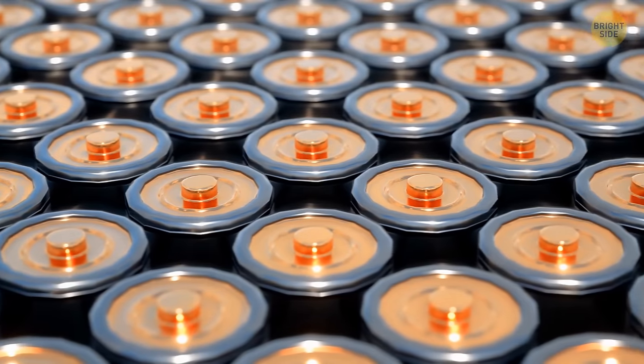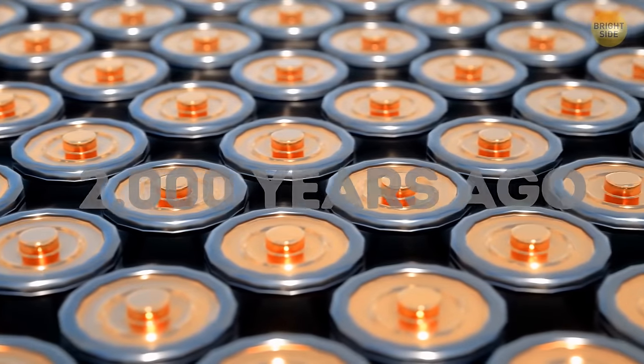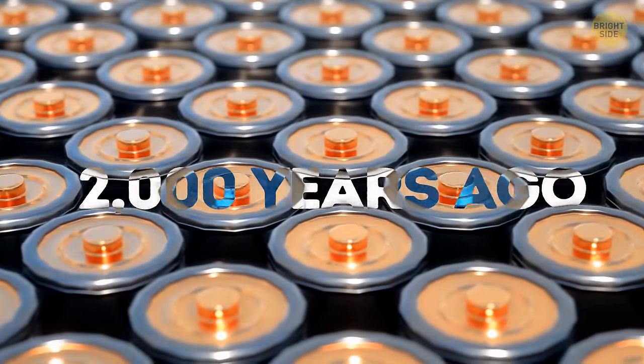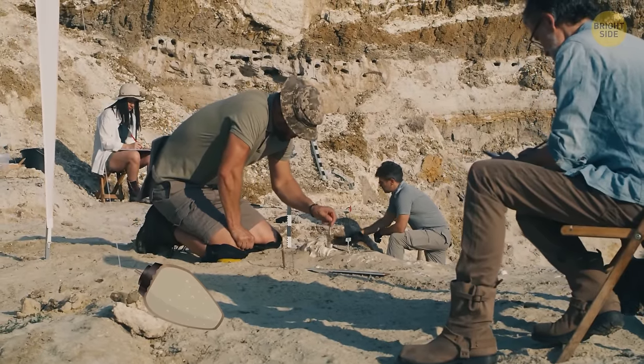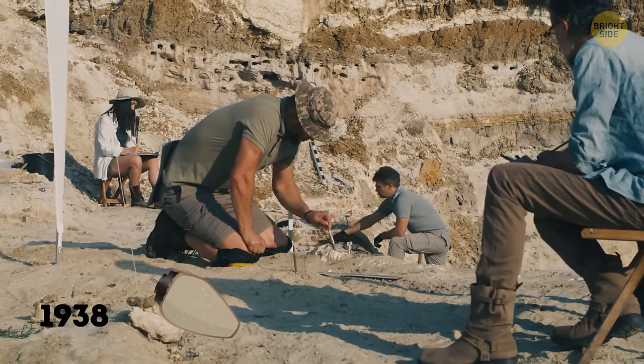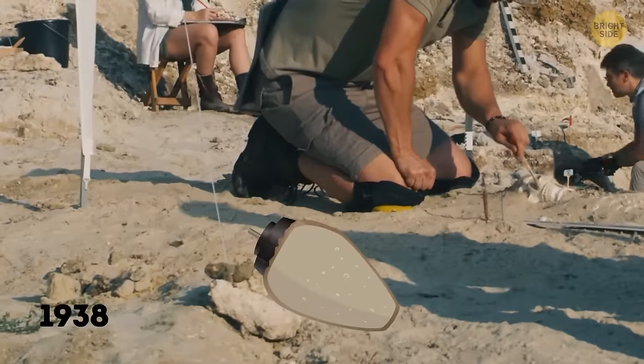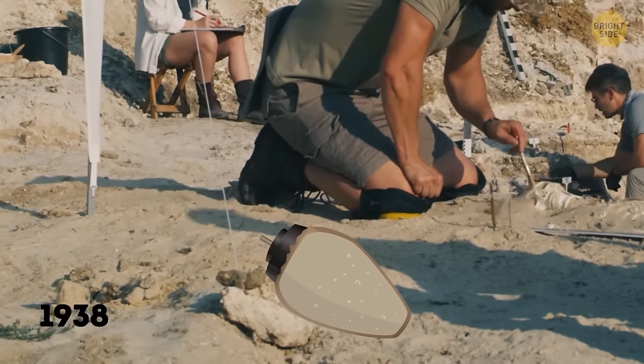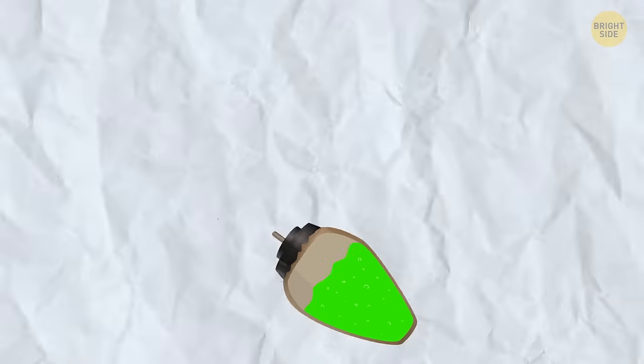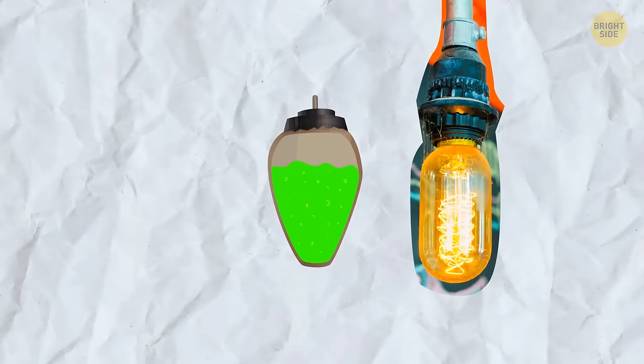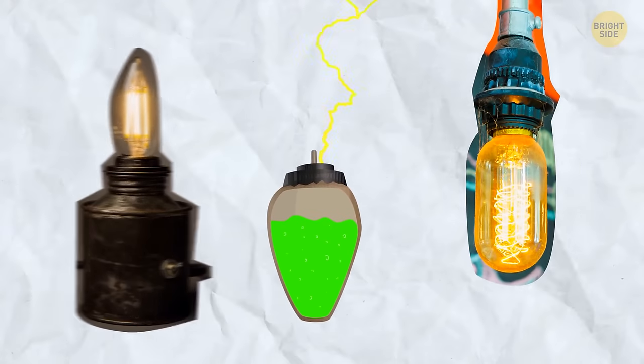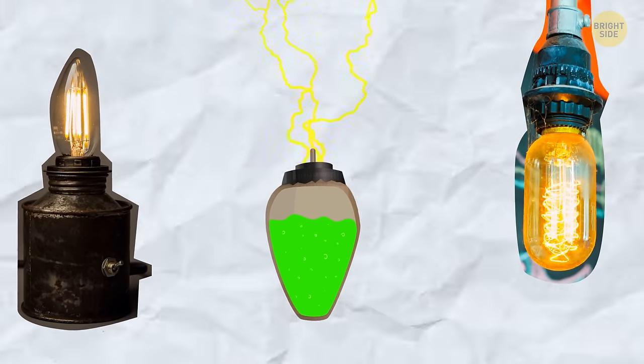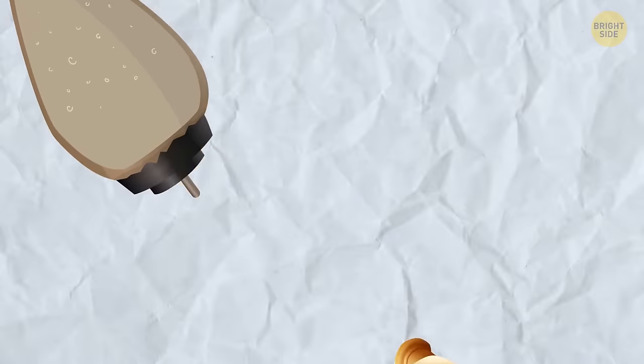Looks like the first ever battery was invented in Baghdad around 2,000 years ago. A German archaeologist found this oval-shaped clay jar in 1938. Scientists are still not sure what purpose it served and who exactly invented it. There is a theory that it was used for electroplating objects with precious metals. When they filled it with a weak acid like vinegar, the battery produced around 1 volt of electricity. Another theory says it was a vessel for sacred scrolls.